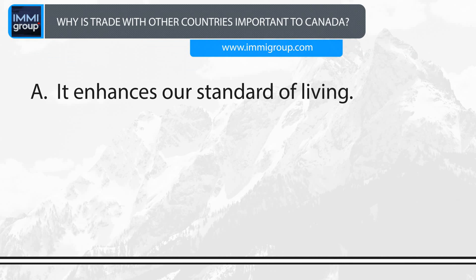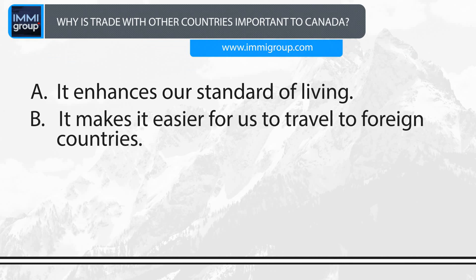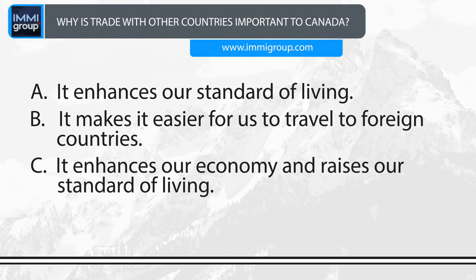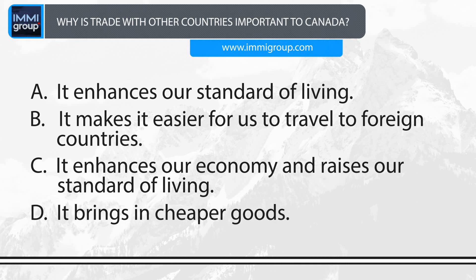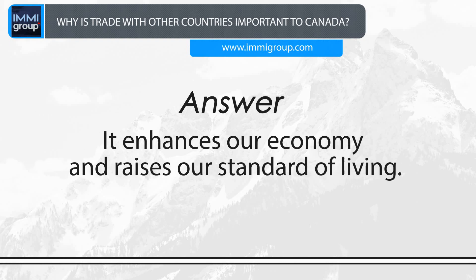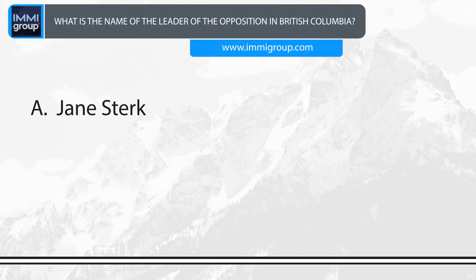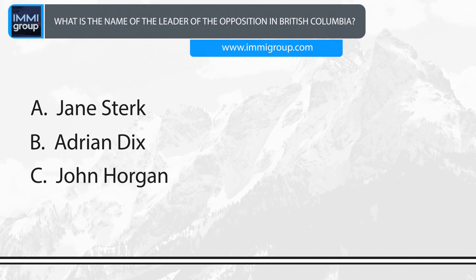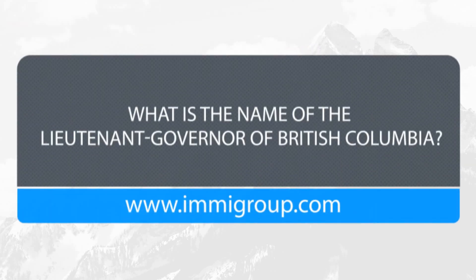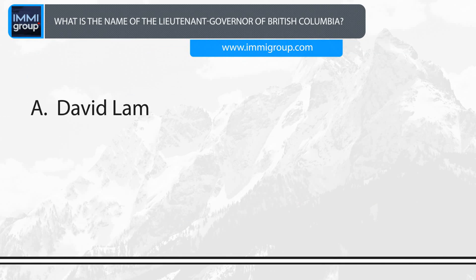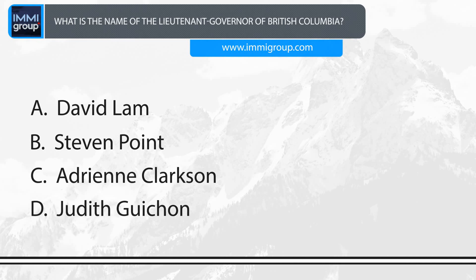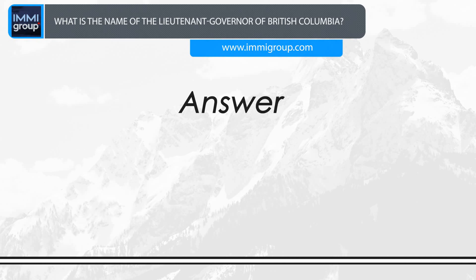Why is trade with other countries important to Canada? A. It enhances our standard of living. B. It makes it easier for us to travel to foreign countries. C. It enhances our economy and raises our standard of living. D. It brings in cheaper goods. Answer: It enhances our economy and raises our standard of living. What is the name of the Leader of the Opposition in British Columbia? A. Jane Sturck. B. Adrian Dix. C. John Horgan. D. Christy Clark. What is the name of the Lieutenant Governor of British Columbia? A. David Lamb. B. Stephen Point. C. Adrian Clarkson. D. Judith Guichon. Answer: Judith Guichon.